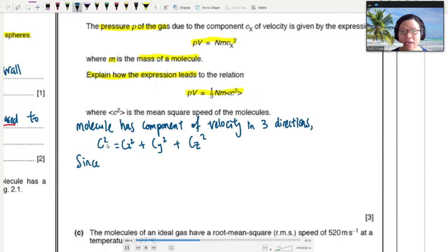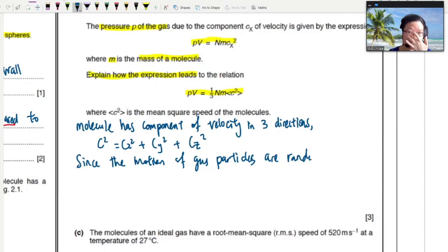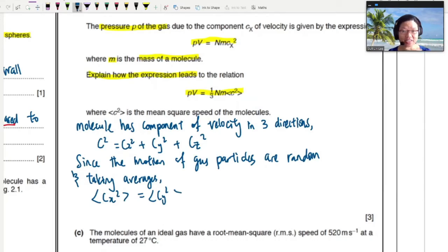This CX squared is equal to CX. I mean, C squared is equal to CX squared plus CY squared plus CZ squared. And then since the motion of the gas particles are random, the average, and you have a lot of particles, so we are taking averages. The mean of C squared, you think about it, because the average for X and Y and Z will be the same if you take a lot of particles. This is a statistical treatment. Then you can write C squared is equal to 3CX squared.